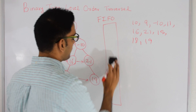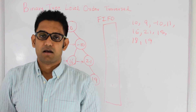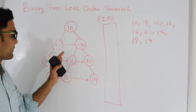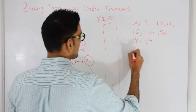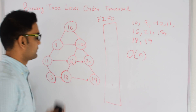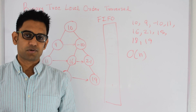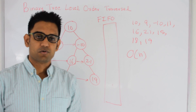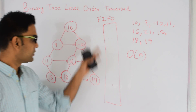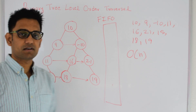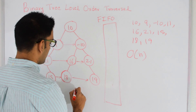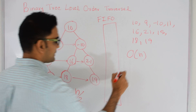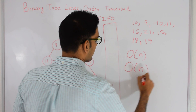Finally the queue is empty so we break out of the while loop. How much time does it take to execute this algorithm? Since we are visiting every node once it will take O(n) time. For space complexity, it depends on the size of the queue, and in the worst case the queue will have all the leaf nodes. The total number of leaf nodes possible is n/2 if there are n nodes in the tree, so the space complexity will also be O(n).